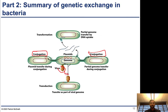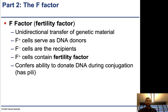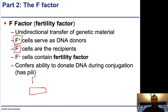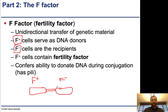Conjugation occurs through a physical bridge that gets built between different cells. We start with the F factor — F for fertility factor — which allows for the unidirectional transfer of genetic material. One cell transfers genetic material to the other, but this is a one-way process. F-positive cells serve as DNA donors; F-minus cells are the recipients. An F+ cell builds this bridge through something called a pilus or pili and bridges onto the F- cell, which doesn't have to do anything for the bridge to latch on.